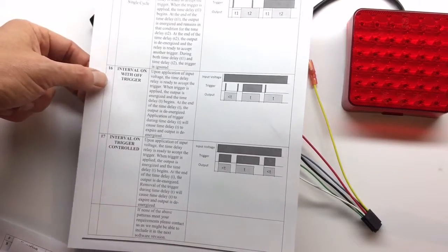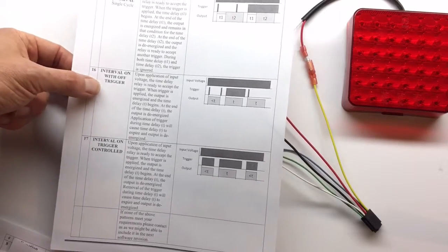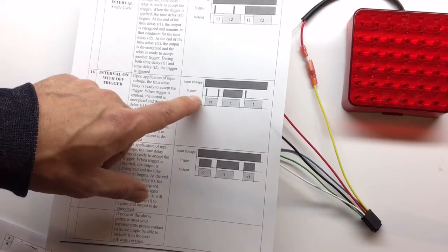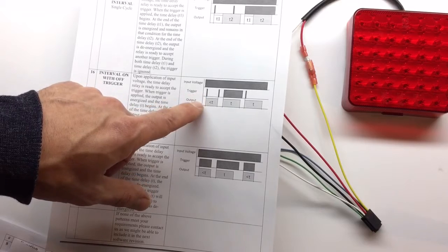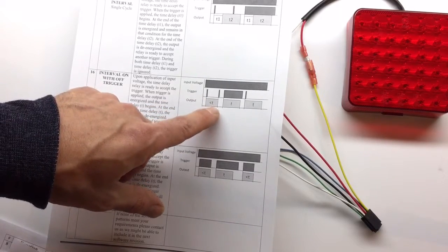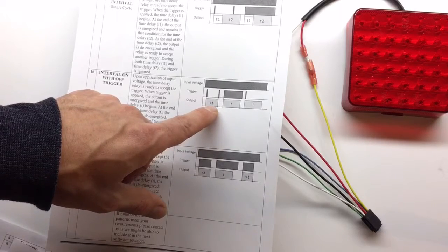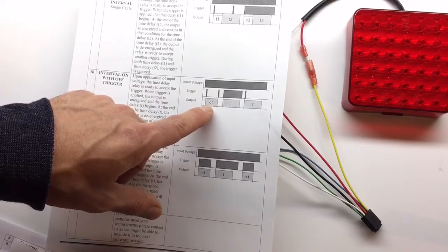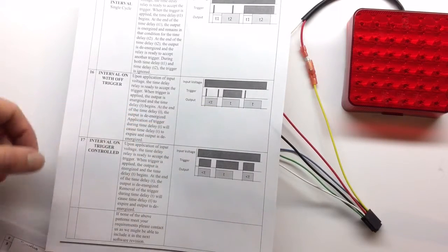Function number 16 is 'interval on with off trigger'. As soon as we apply the trigger, the light comes on. But if we apply the trigger during the light-on time, applying the trigger one more time will actually turn the light off.